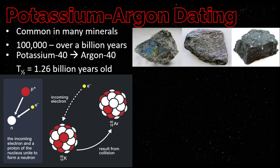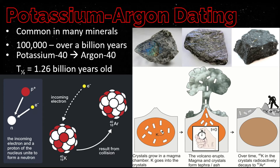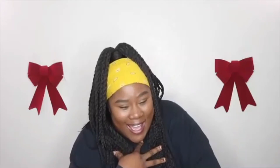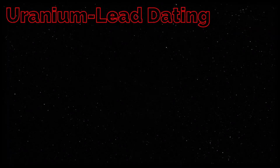This figure shows how potassium-40 becomes argon-40. Argon is a gas, allowing it to escape from molten magma. Thus, any argon found in an igneous crystal probably formed as a result of the decay of potassium-40. Measuring the ratio of potassium-40 to argon-40 yields a good estimate of the age of that crystal.